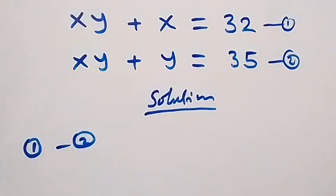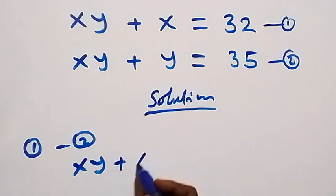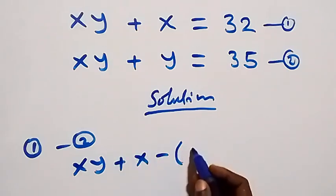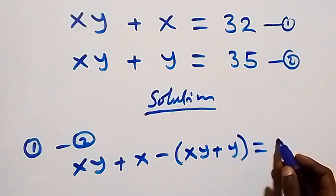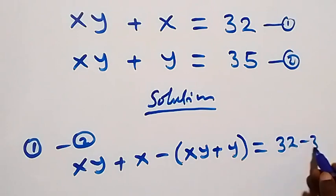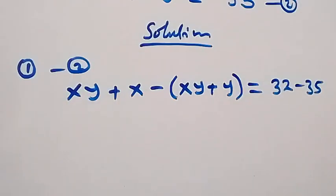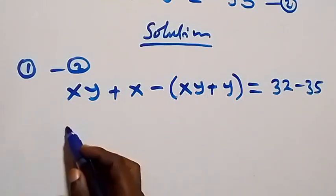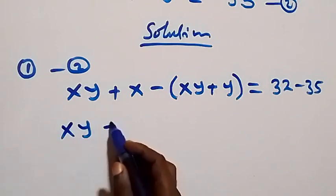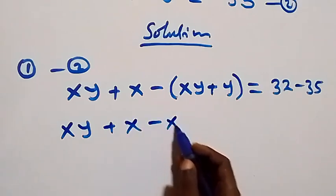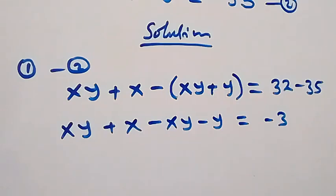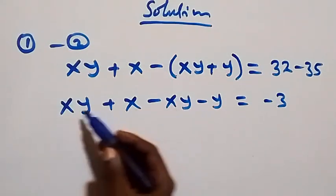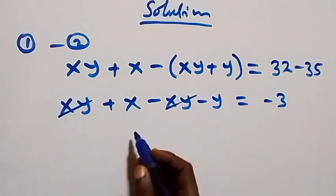Equation one minus equation two: on the left hand side we have xy plus x, then minus equation two we have xy plus y, equals 32 minus 35 on the right hand side. Opening the bracket, we have xy plus x minus xy minus y equals negative three.